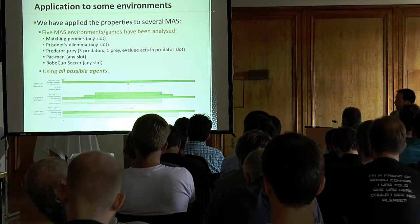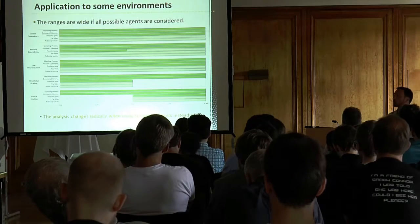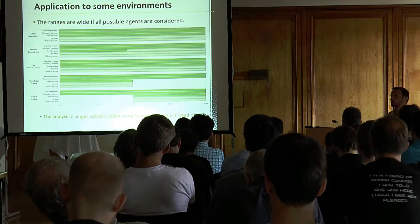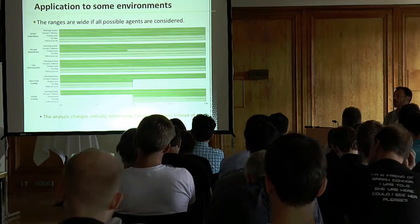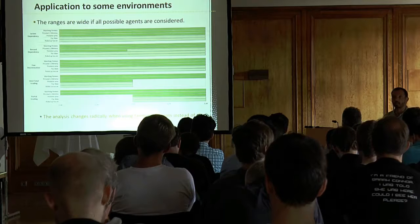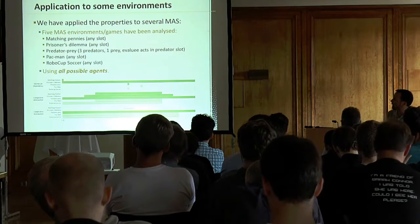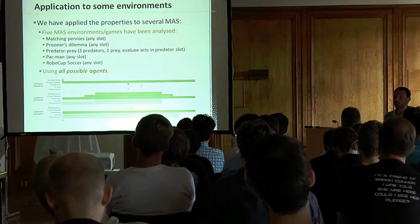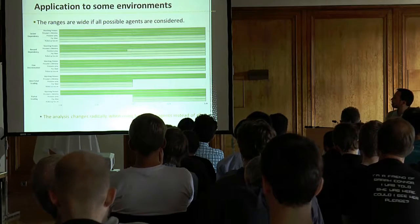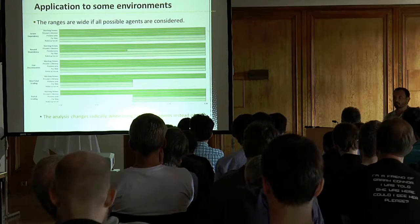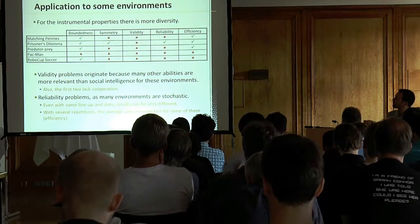What we see is that many environments are similar across properties, except in some cases. When calculated with all possible agents you can get the worst or best evaluation test depending on the set of agents used as opponents and collaborators. Some environments didn't have good properties — for instance, the matching pennies and prisoner's dilemma had zero cooperation, even though one might think they involve cooperation, because the other player is on the opposing team. The instrumental properties showed more diversity, especially in efficiency.